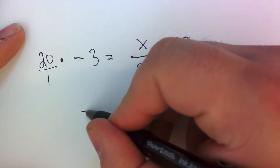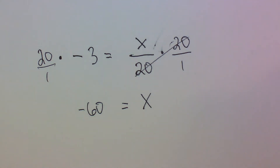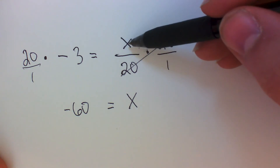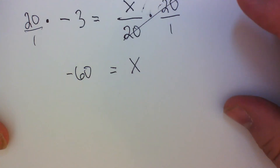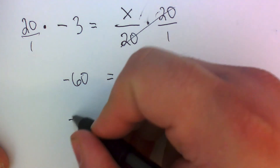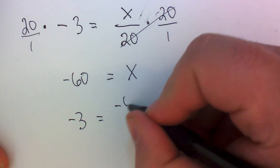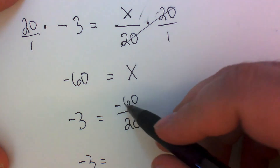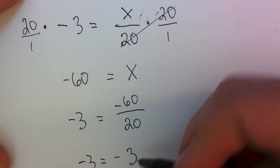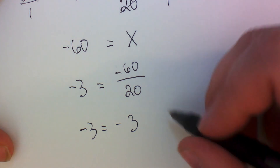I have 20 times negative 3, which is negative 60. Now I need to prove that my statement is true, since an equation is a mathematical statement of truth. I plug negative 60 back in: negative 60 divided by 20 — I know 20 goes into 60 three times, so that gives negative 3. Therefore negative 3 equals negative 3, which makes the statement true.